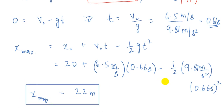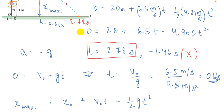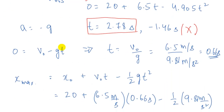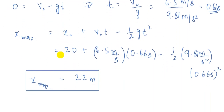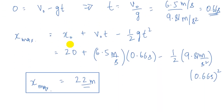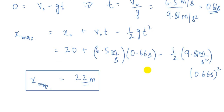From this problem, we observe that the sandbag continues to move upward for 0.66 seconds after separating from the basket, reaching a maximum height of 22 meters, then moves downward and hits the ground 2.78 seconds after detaching. In the next video, we'll review all the topics studied in Chapter 2.